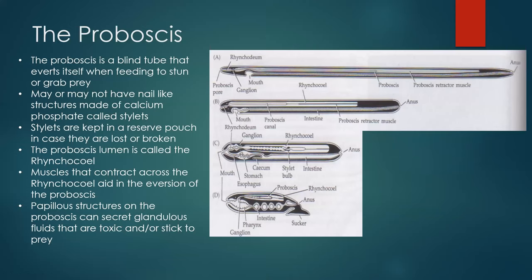The main defining characteristic of Nemertea is their proboscis — a blind tube that inverts itself to grab, stab, or sting prey. Some species will even inject neurotoxins using the proboscis. Some nemerteans contain a nail-like structure called a stylet, which is used to pierce their prey. Because of the nature of the stylet, they will often be broken or lost and regularly need to be replaced. Most nemerteans that have stylets will maintain reservoirs of extra stylets for this purpose.